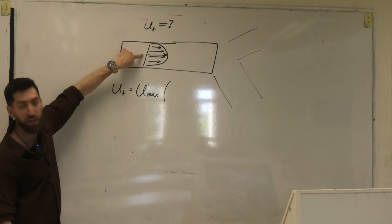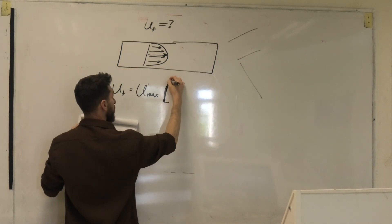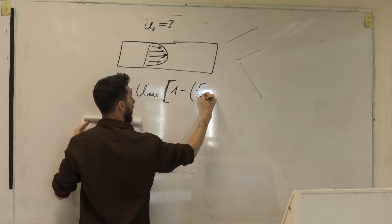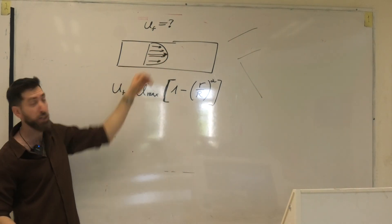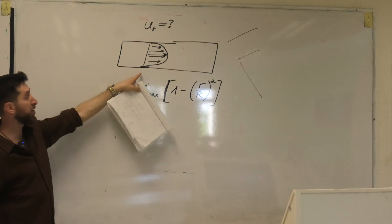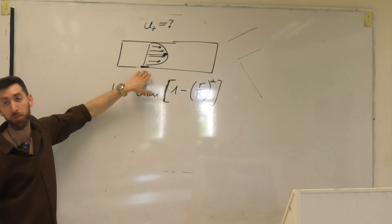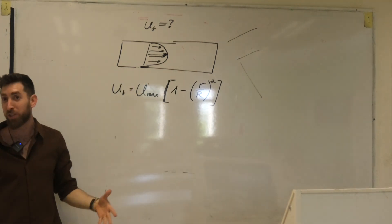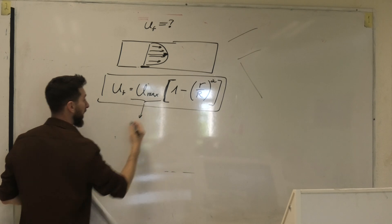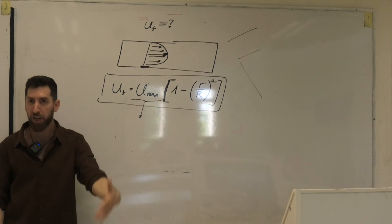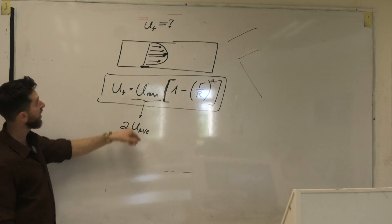The Poiseuille flow equation is: u_f = u_max × [1 - (l/R)²], which gives the parabolic shape. The velocity near the wall is zero and the highest velocity is at the center — this makes sense because the wall is not moving so the air next to it should not move either. The maximum velocity u_max is twice the average velocity from mass conservation.